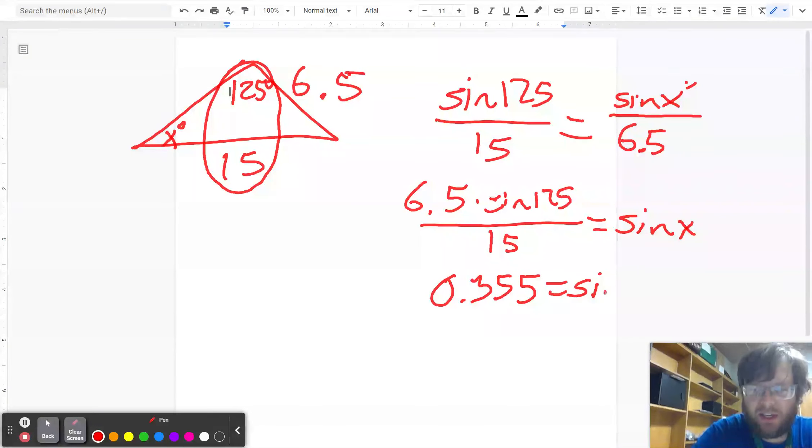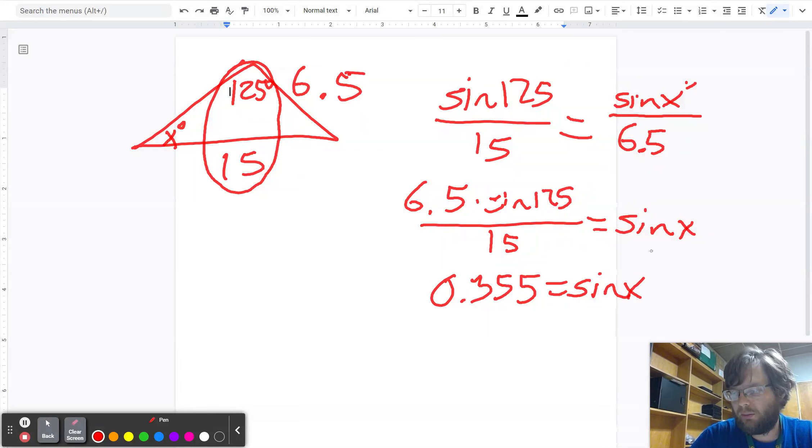Now, I want you to notice this is not the angle. I'm not saying that it's 0.355 degrees. This is what the sine of the angle is. And so, there's something we haven't quite done yet, but it makes sense here. What we're doing is we're undoing sine.